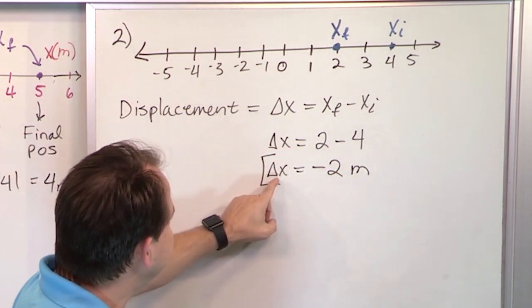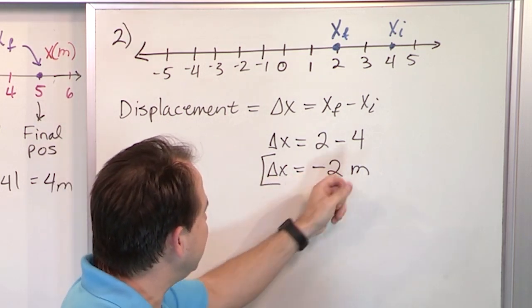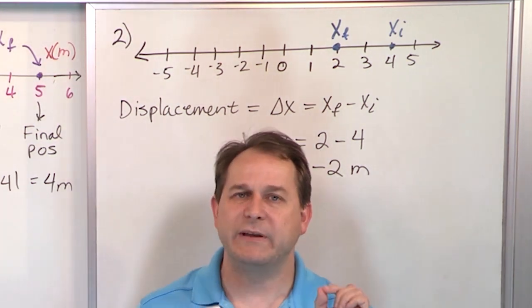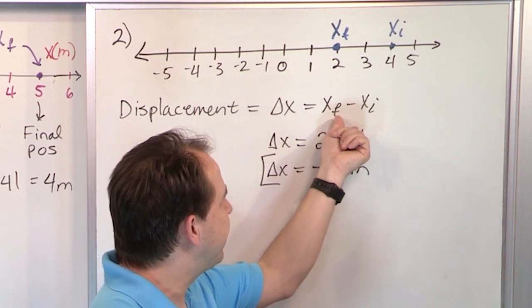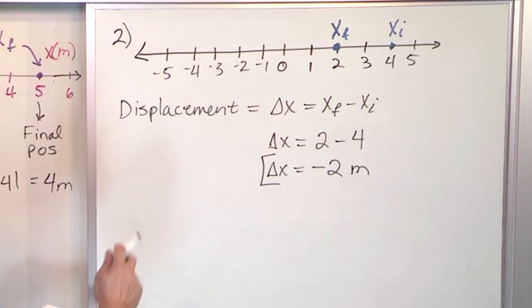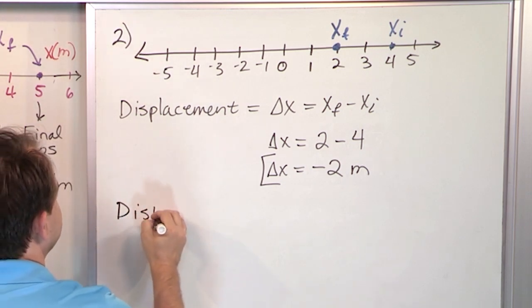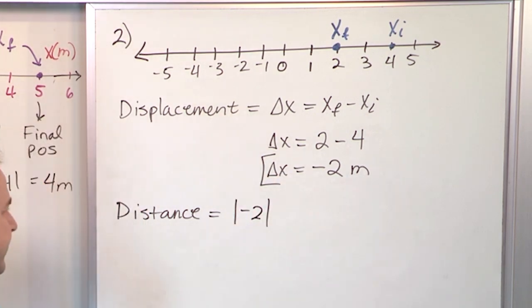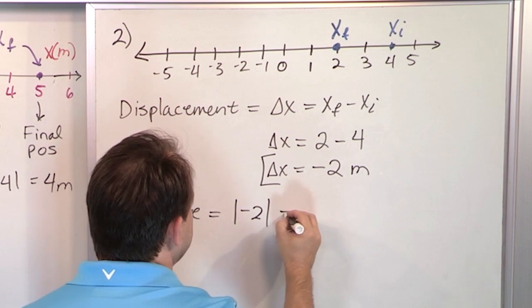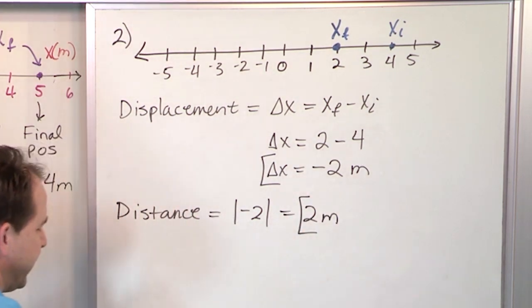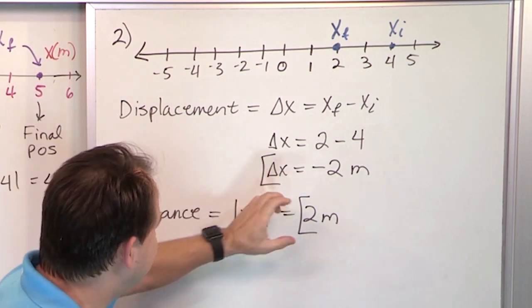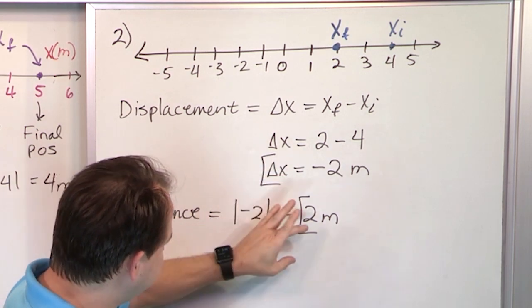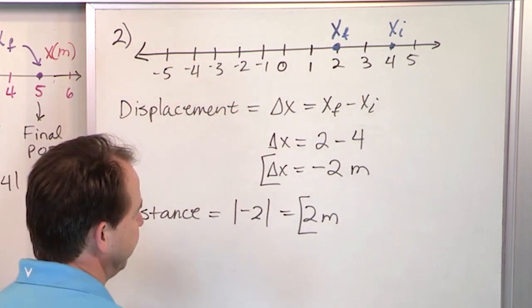So you look at this and you say, what does this mean? It means the change in x was two meters, but the negative sign tells me I moved to the left. If it were positive two meters, it would have meant I moved to the right. But the equation is done the exact same way — final value of x minus initial value. Now let's compare and contrast this to the distance traveled. The distance traveled is just the absolute value of the displacement — I literally take the sign and throw it away, so it's two meters.